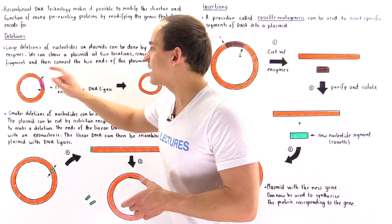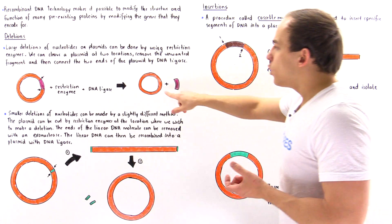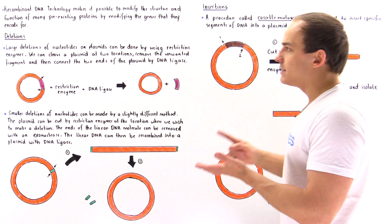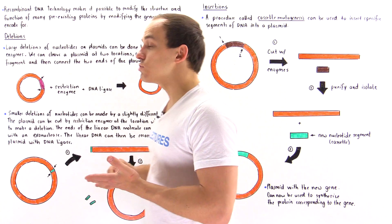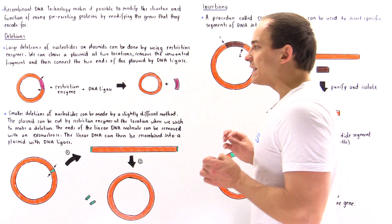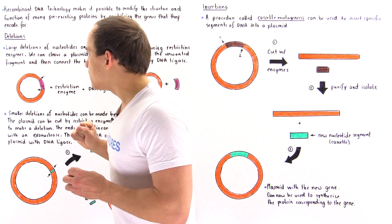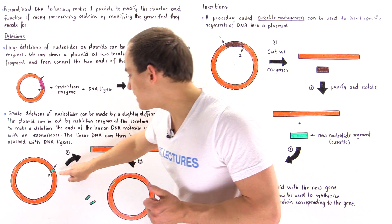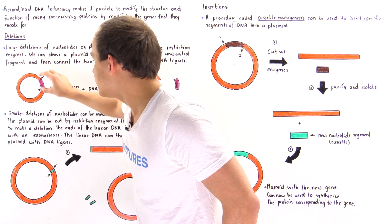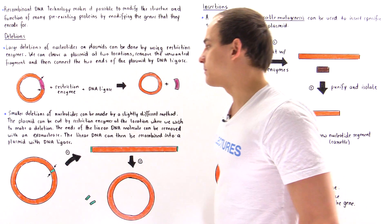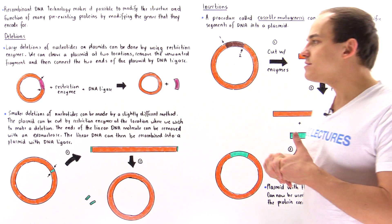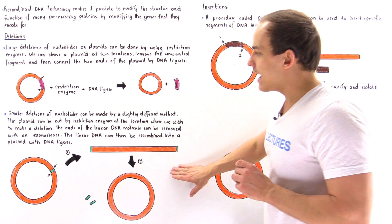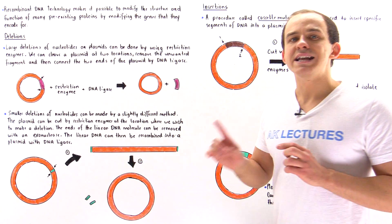At the end, we produce a new synthesized plasmid from which we deleted a large chunk of the DNA molecule — the purple section is removed. We can then place this plasmid into a bacterial cell, and that cell can synthesize the gene the plasmid codes for. Now, instead of removing a large segment, if we want to remove a much smaller segment, this requires a slightly different approach using something called an exonuclease.